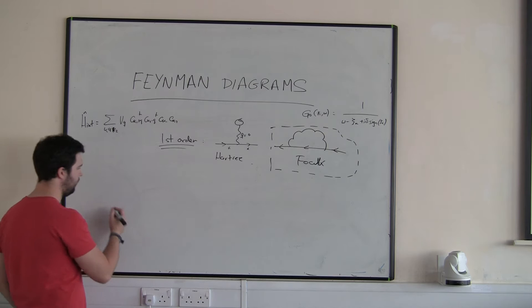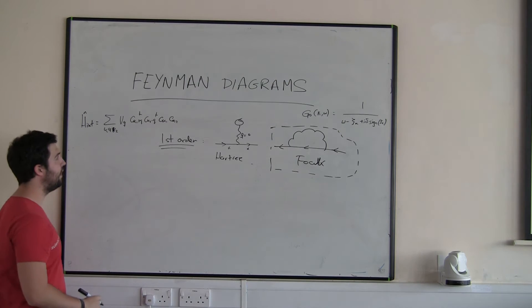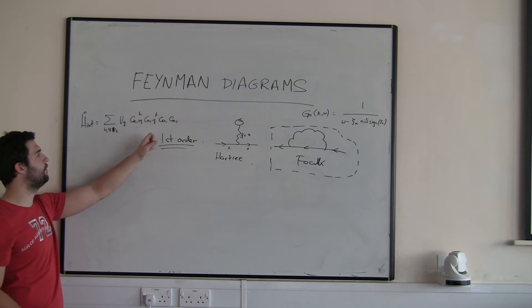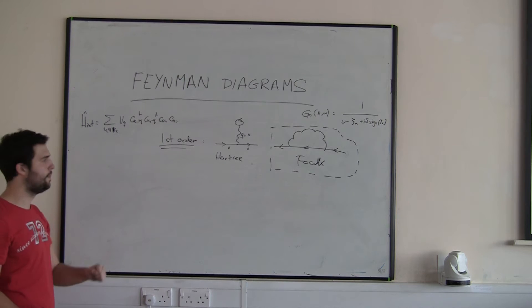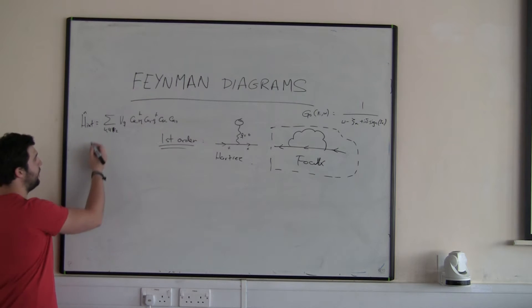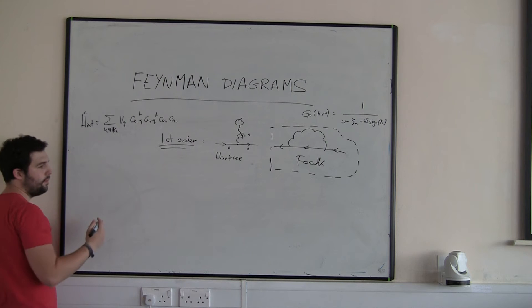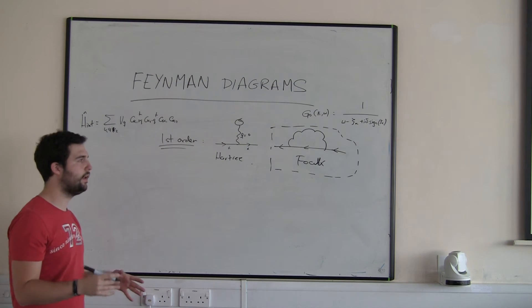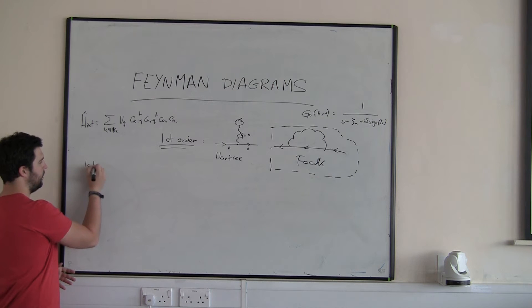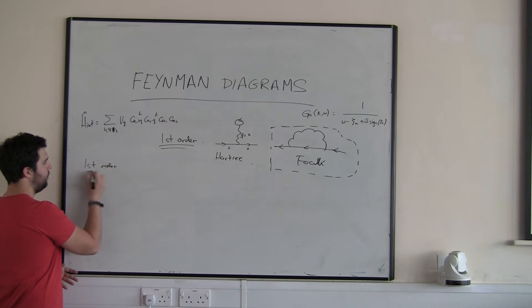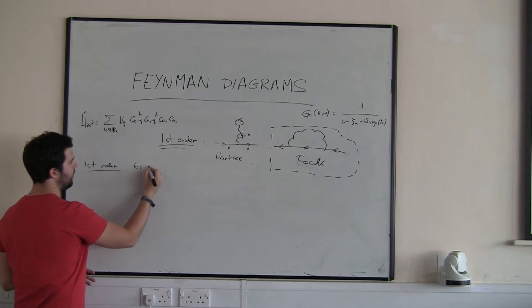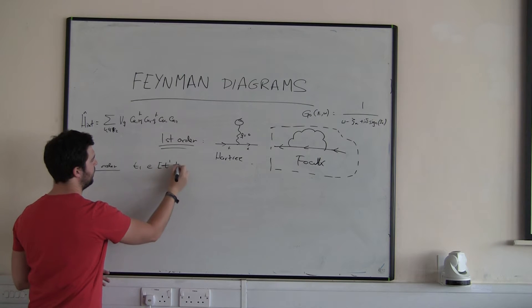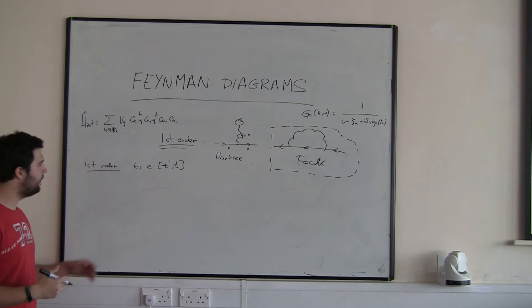There is something you can always do if you have an interacting term of this type with four operators — two creation and two annihilation. Our interacting term always occurs at a middle time t1 in first order. That has to be a time t1 belonging to the interval from t-dash to t, so it's a time in between the two.